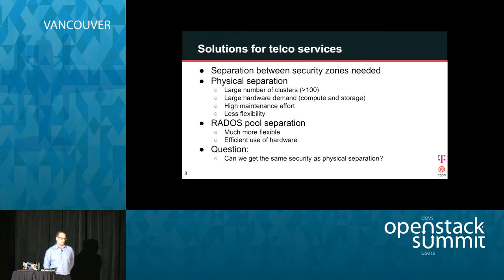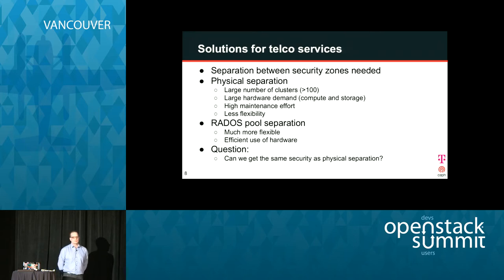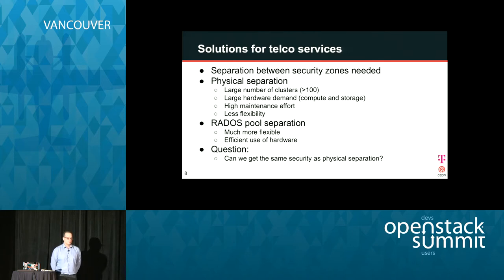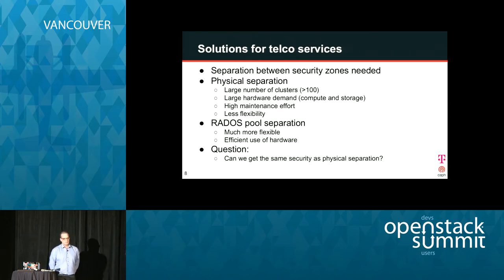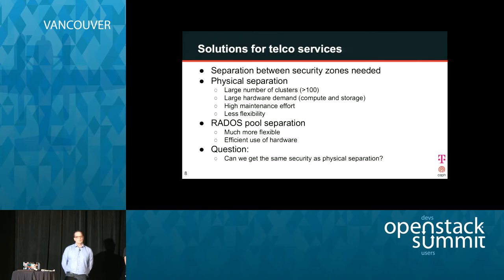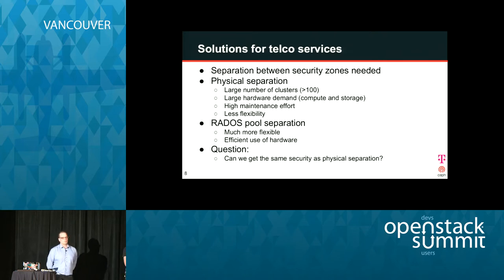The main problem is how to do separation between security zones, especially for storage. On one hand, you can simply build physical separation and build a separate Ceph cluster for each security zone. In our setup, we have at least 20 front-end data centers, meaning a high number of clusters to maintain. That obviously needs a lot of hardware and maintenance effort, and takes away a lot of the flexibility provided by Ceph. The alternative would be to use Rados pools, which is more flexible and allows more efficient hardware use, especially since front-end data centers are very small.